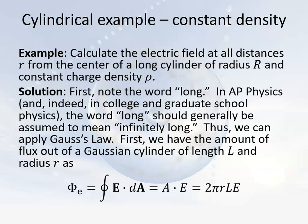Whenever they use the term 'long,' what they mean is infinitely long. That's true in AP Physics C Electricity and Magnetism, in your 200-level engineering class in college, and in your 300-level electromagnetism class in college. So whenever they say 'long,' what they really mean is effectively infinitely long. So we write down Gauss's Law: the amount of flux on the left side — well, we've simply written down the definition of flux, which is just area times E.